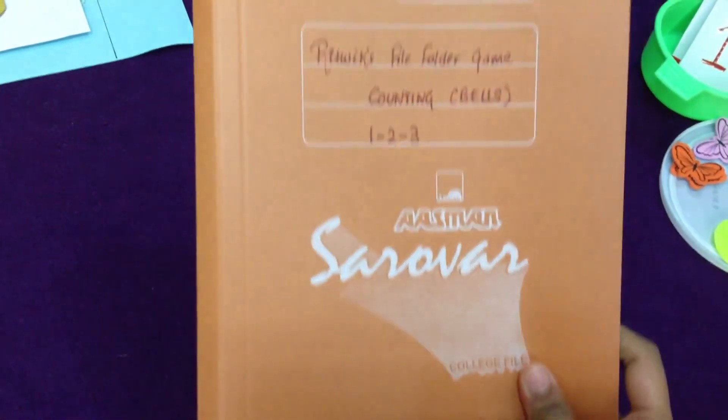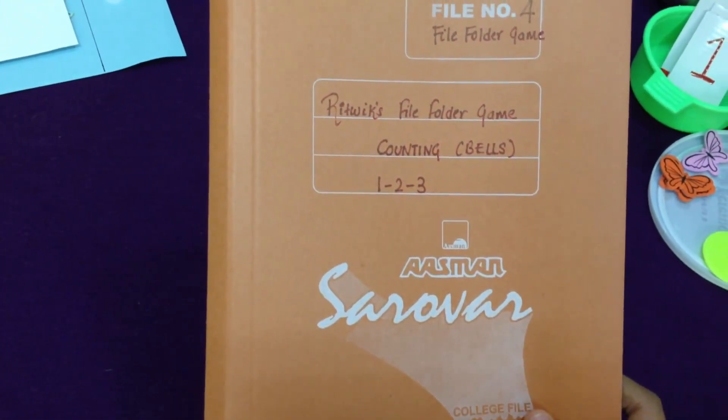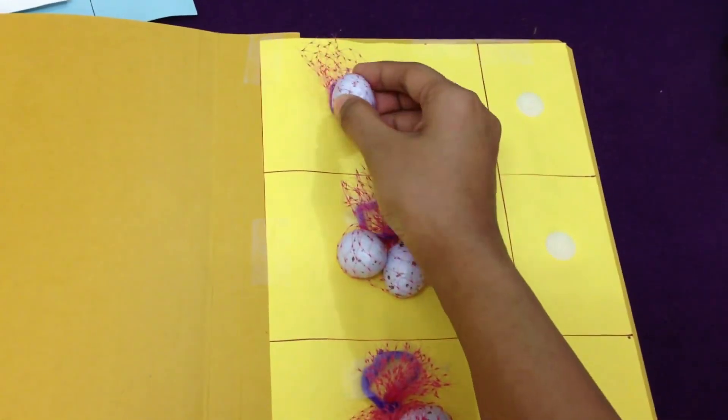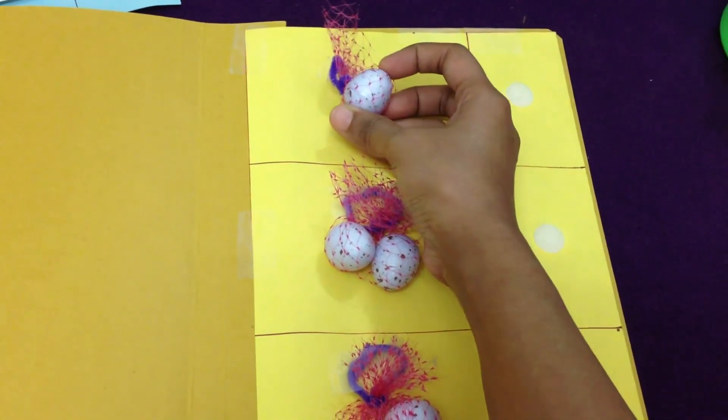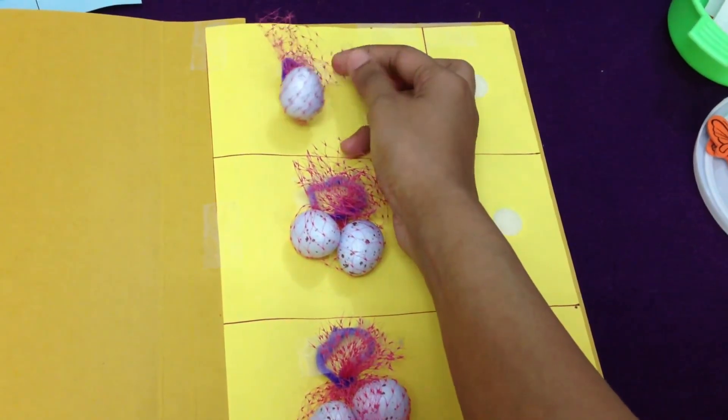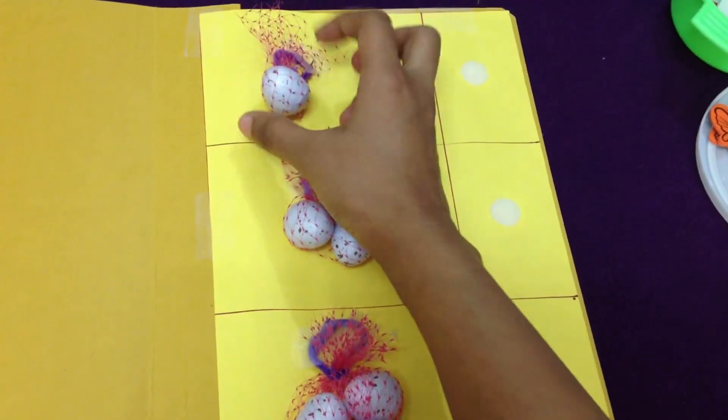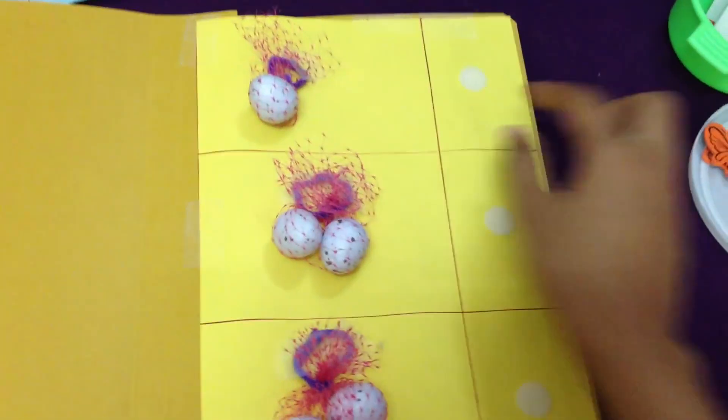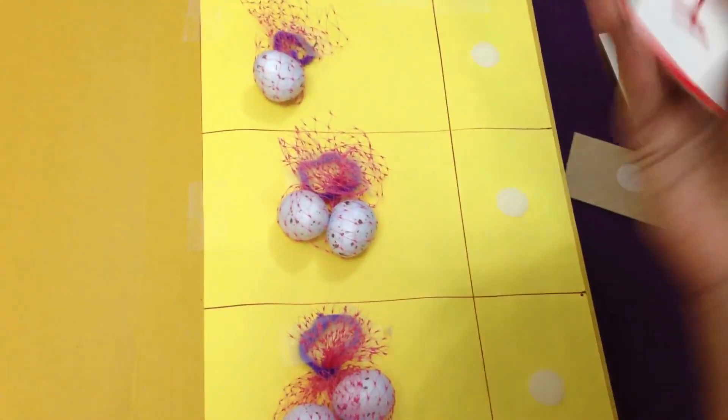Then I have this one. I had these model eggs that I got from an online shop called itsybitsy.in, and I had this net at home. I just made a nest kind of look, and all that he has to match are the numbers.